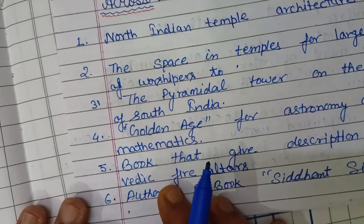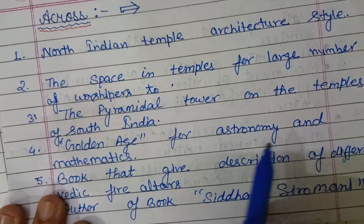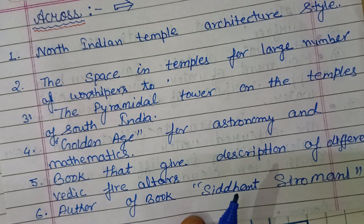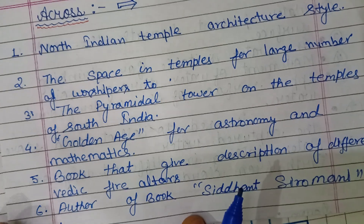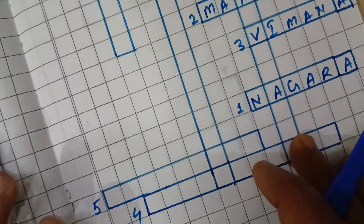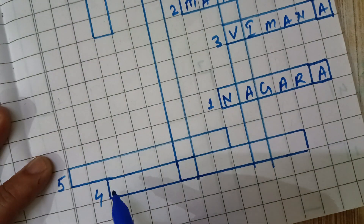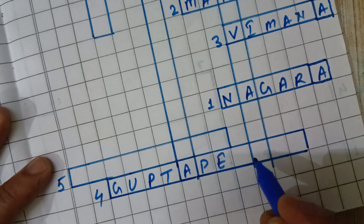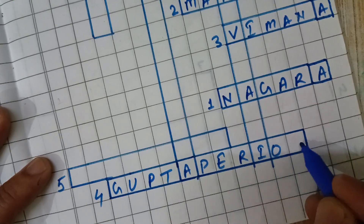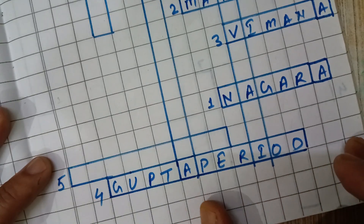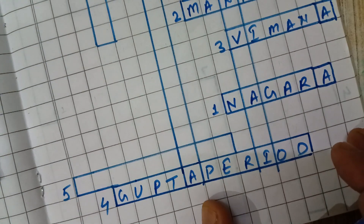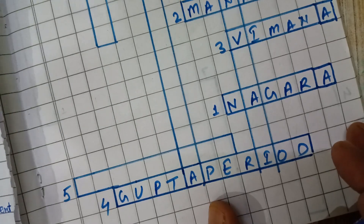Fourth question: Which age is known as the golden age for astronomy and mathematics? The right answer is the Gupta period, filled in four across. The Gupta period is the golden age for astronomy and mathematics. Mathematicians like Aryabhata are from this period.